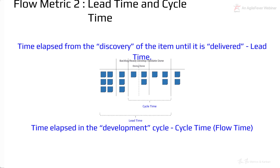We are defining lead time as the time between when an item is discovered until the time it is delivered — from the time the customer has brought it up and it has found a place on one of your boards, till the time it is actually delivered in the hands of the customer. Cycle time is defined as the time elapsed in the development cycle, from the point where the team actually gets involved to pick up the story and do the actual development work.